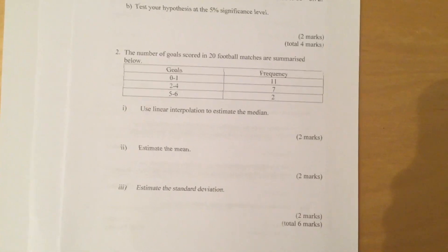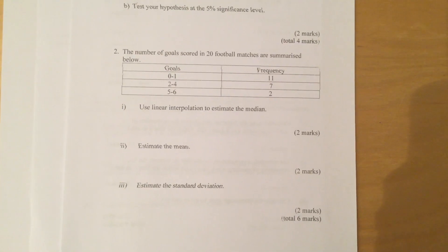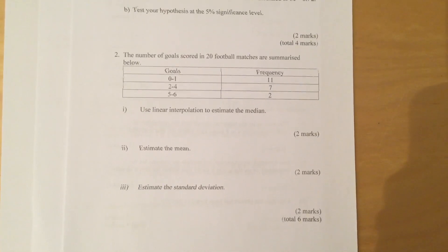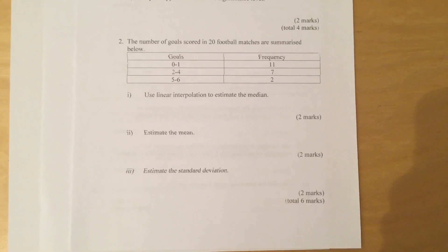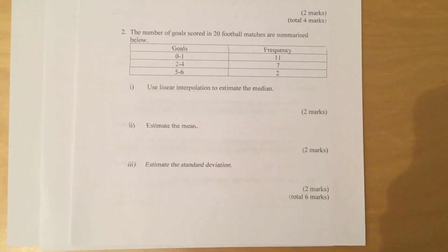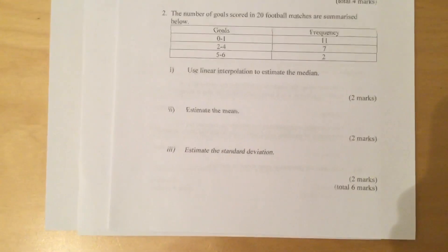Question 2: The number of goals scored in 20 football matches are summarized below. Goals 0 to 1, frequency 11; goals 2 to 4, frequency 7; goals 5 to 6, frequency 2. Part 1: Use linear interpolation to estimate the median. Part 2: Estimate the mean. Part 3: Estimate the standard deviation.